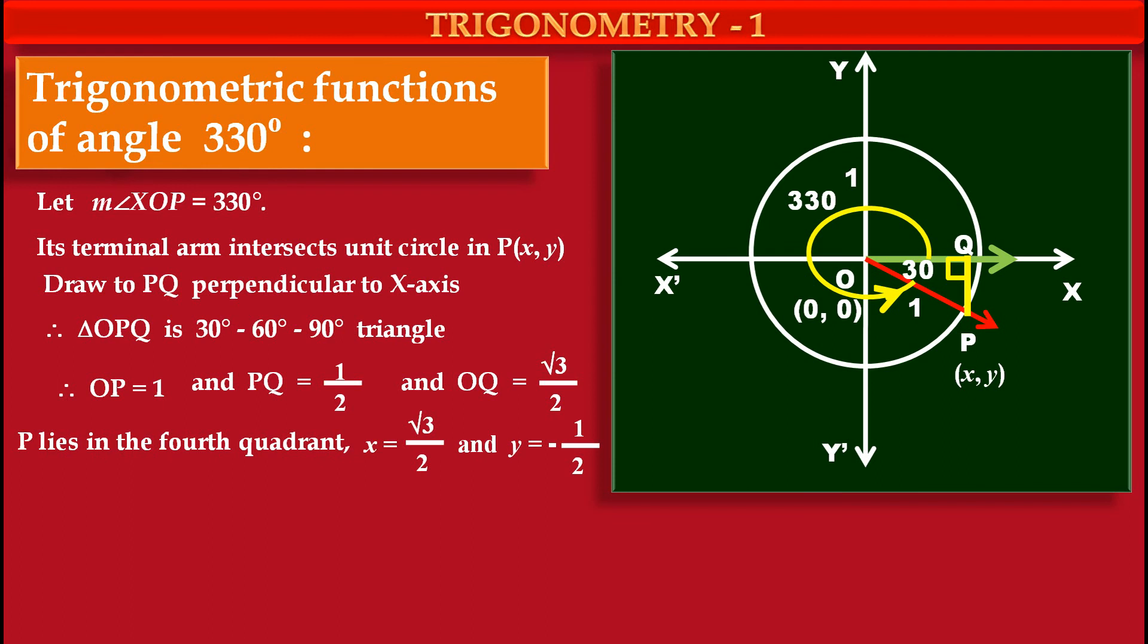Now we know according to polar coordinates, cos theta is equal to x and sin theta is equal to y. Now here first we have to find out sin 330. And that's why sin 330 is equal to value of y, that is minus 1 upon 2.